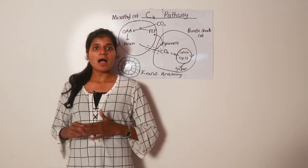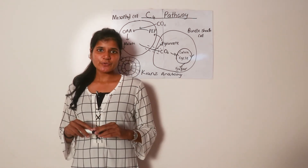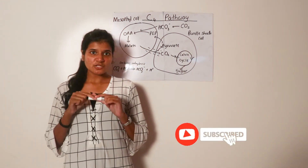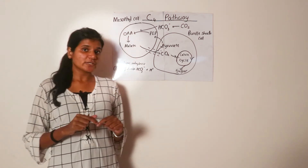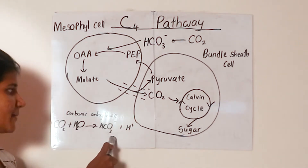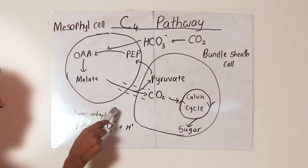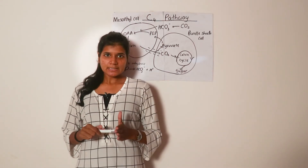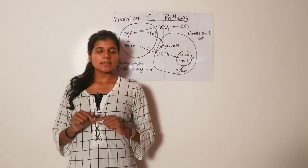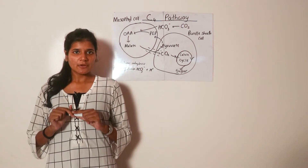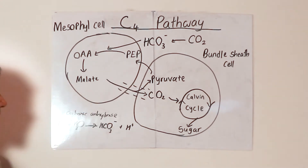Because of this carbon dioxide concentration mechanism in C4 plants, even when the stomata are half closed, these plants can undergo photosynthesis effectively and minimize photorespiration. In the mesophyll cells, there is an enzyme called carbonic anhydrase. Carbon dioxide in the mesophyll cells reacts with water and forms bicarbonate ions and hydrogen ions — this reaction is catalyzed by carbonic anhydrase. The carbon dioxide acceptor in mesophyll cells of C4 plants is not RuBP; it is a compound called phosphoenol pyruvate, or PEP. This carbon dioxide acceptor reacts with the bicarbonate formed.